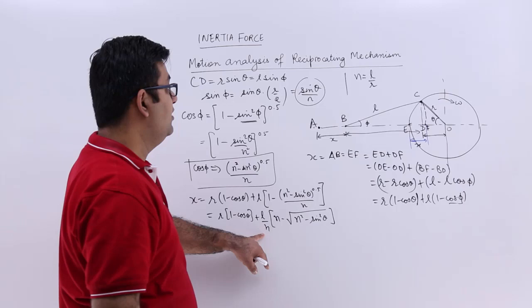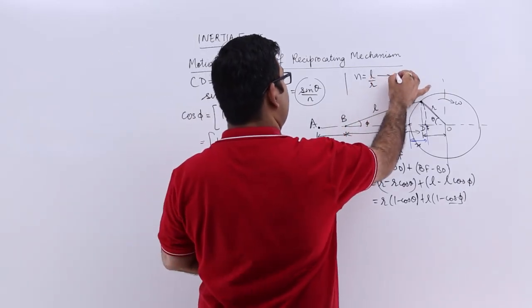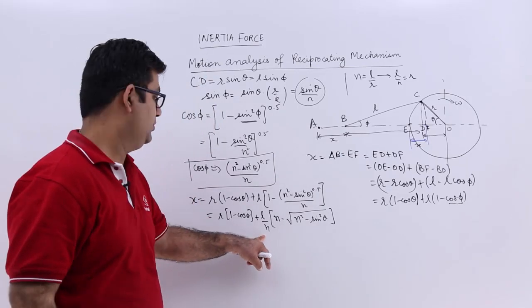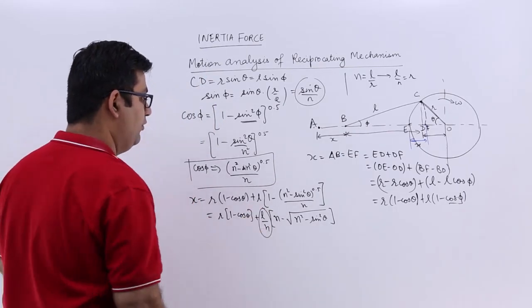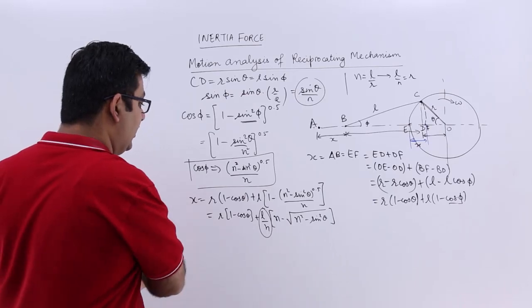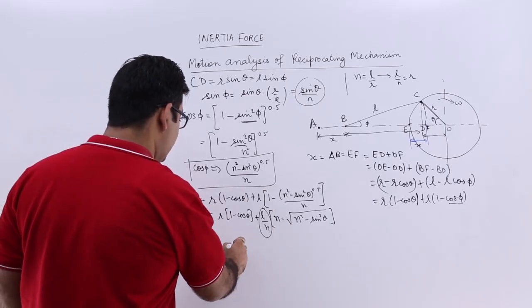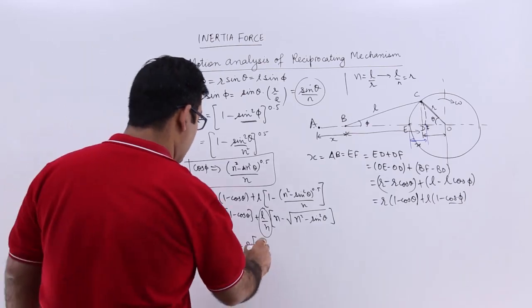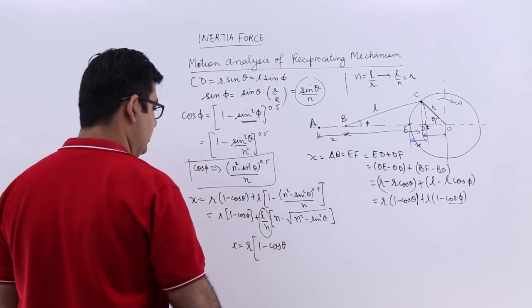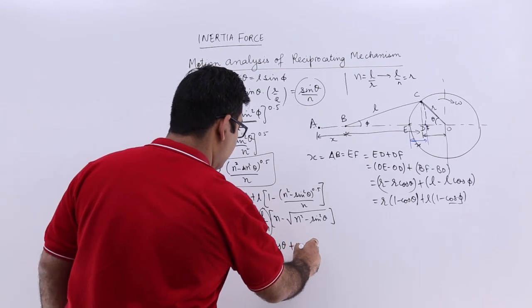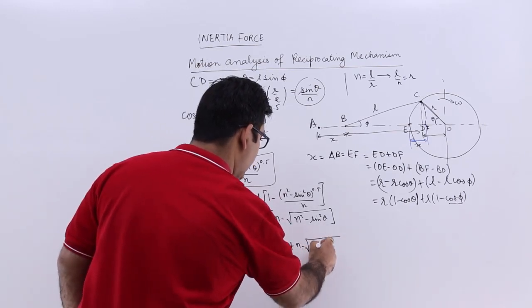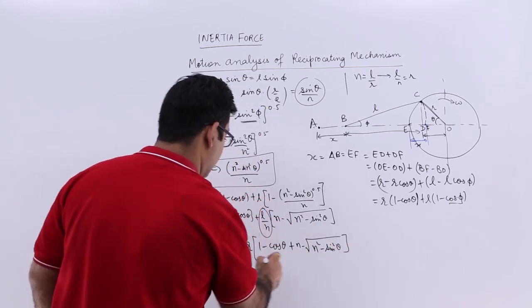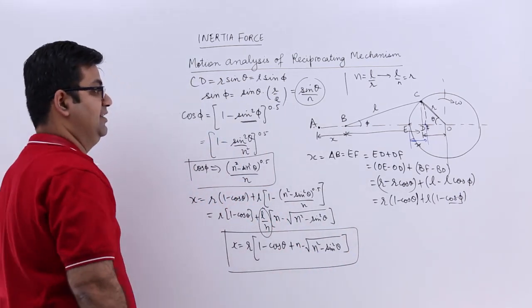Now what is L by N from here? L by N is equal to the crank radius. So I can substitute this value for R and take everything common. You will have X is equal to R into 1 minus cos theta plus N minus square root of N square minus sin square theta. So this is the value of X.